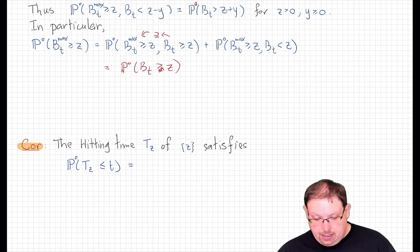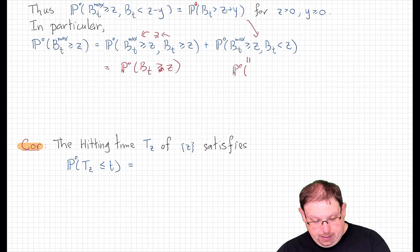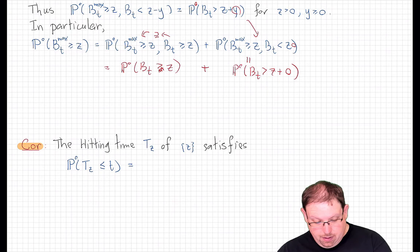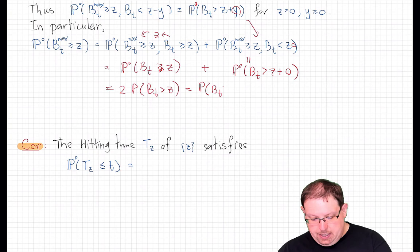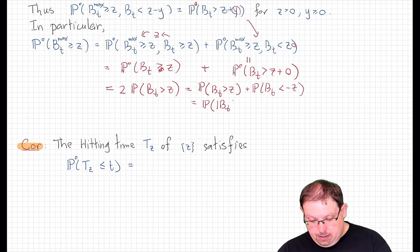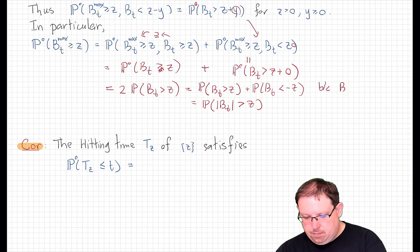We can equally write that as the probability bt is strictly greater than z, since Brownian motion has no point mass anywhere. The second term is what we just proved, equal to the probability that bt is greater than z plus y with y equal to zero. So these two terms are equal, and the total probability is twice the probability that bt is greater than z. By symmetry of Brownian motion, that equals the probability that |bt| is greater than z, proving Bachelier's principle.